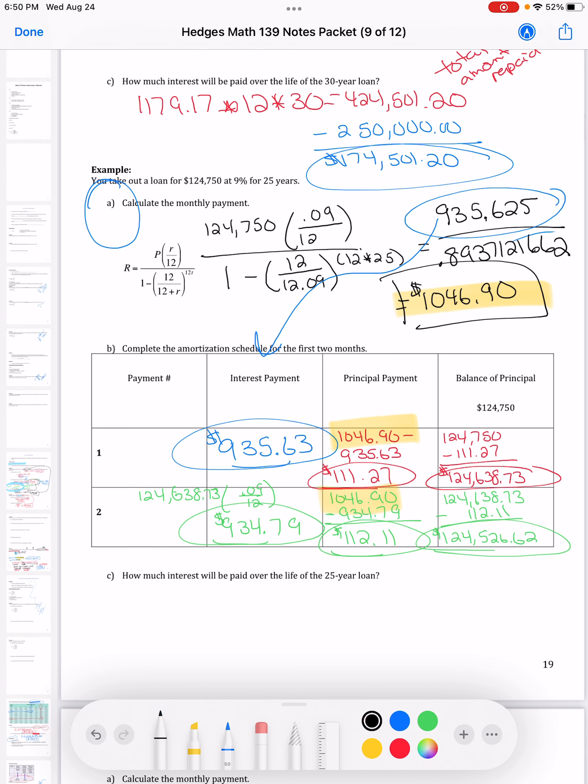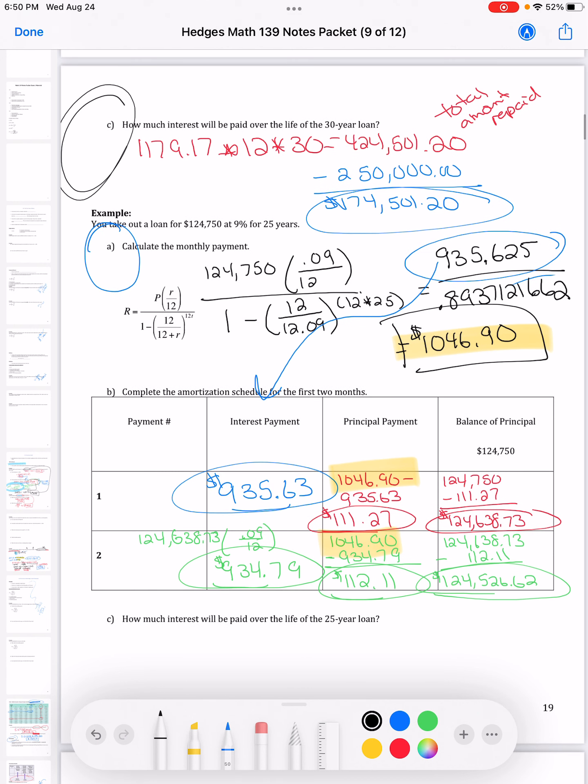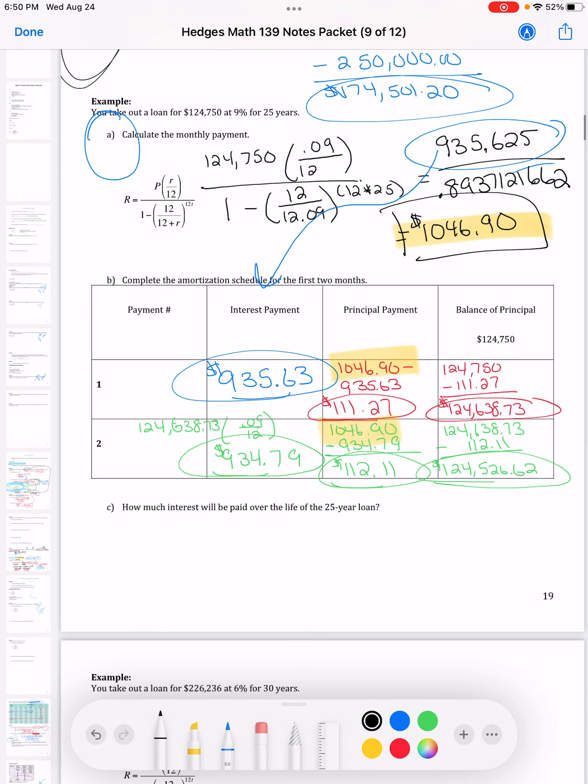How much interest? We've done several of these. This one I do want you to maybe try and give a shot. It's just like C up here above. So hit pause, try to give part C here a shot before we go over it.